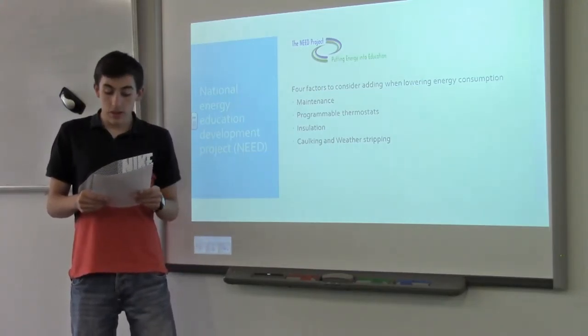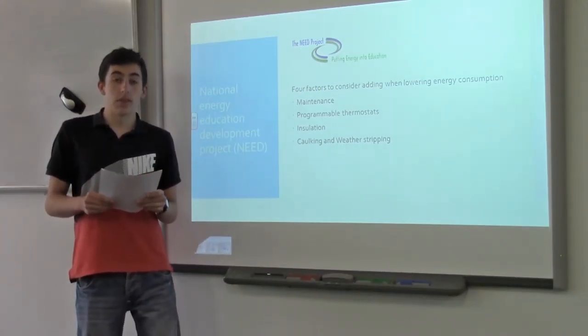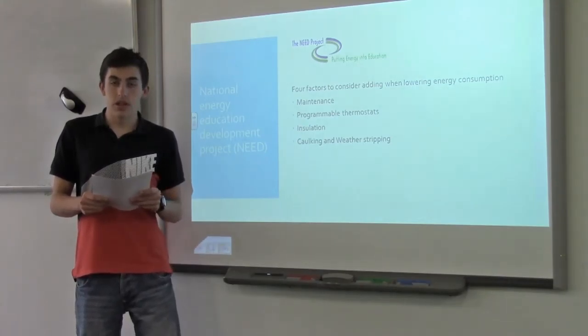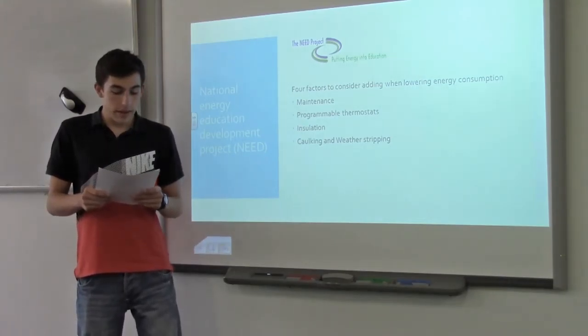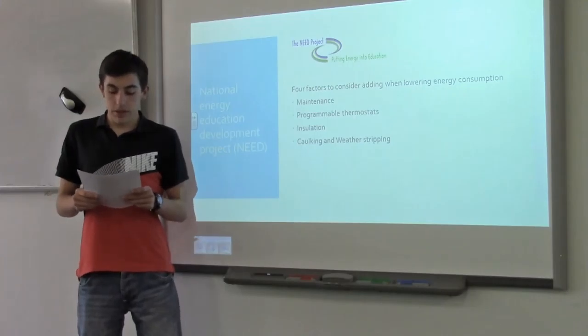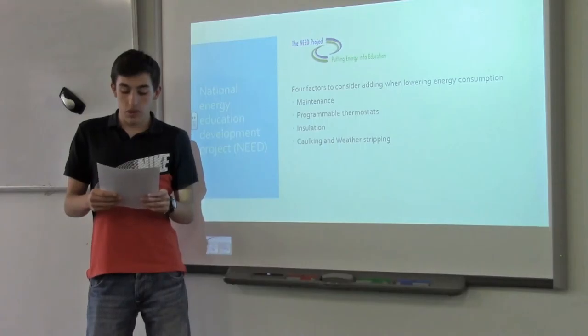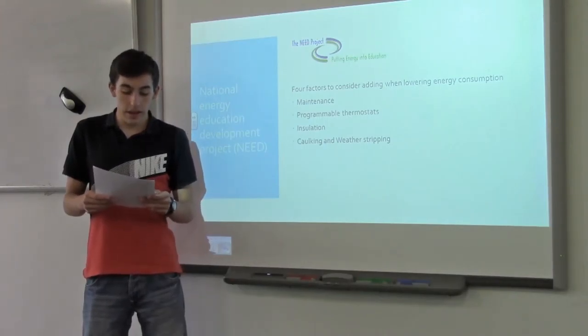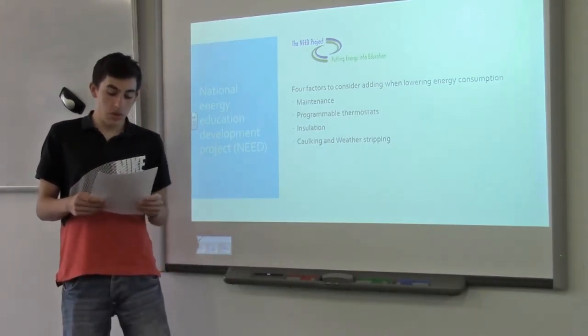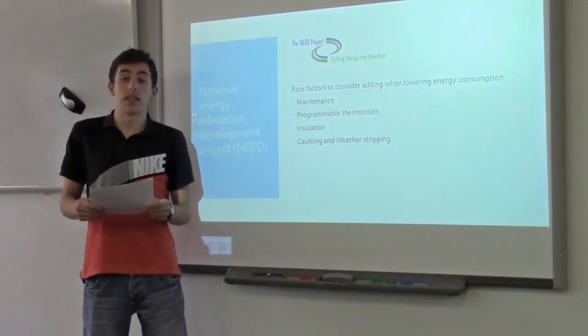Insulation: simple addition to housing insulation can prevent additional heat energy from escaping and is important to an energy efficient home. Finally, there's caulking and weather stripping. Preventing the exchange of inside air with outside air is very important. Weather stripping and caulking around doors and windows can significantly reduce air leakage, keeping windows and doors closed when systems are operating is also a necessity.